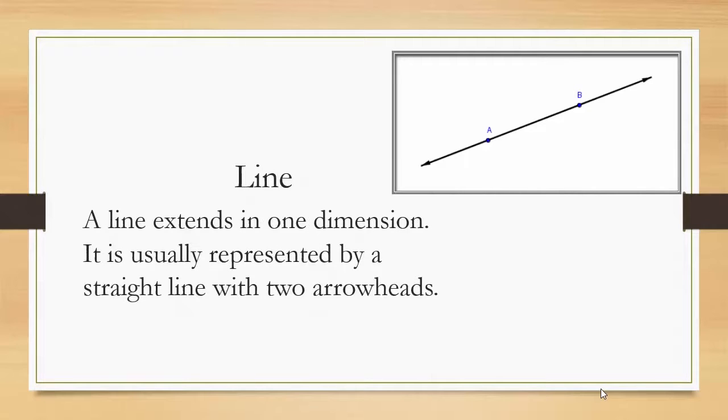Line. A line extends in one dimension. It is usually represented by a straight line with two arrowheads. So as you can see in the picture, on both sides of the line are two arrowheads that represents a line. The notation used for a line is the two endpoints in a line along with an arrow that goes both ways on top of the letters.